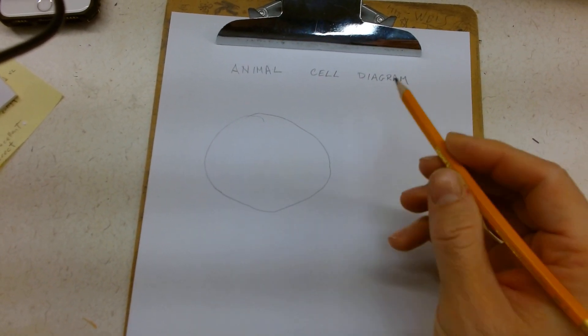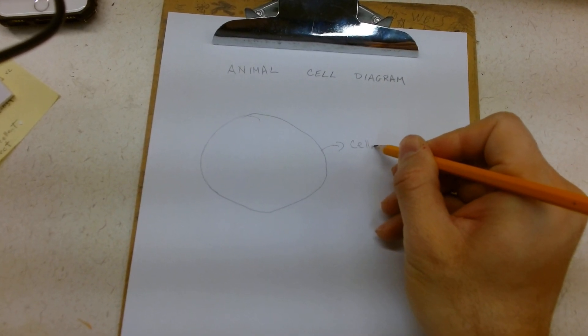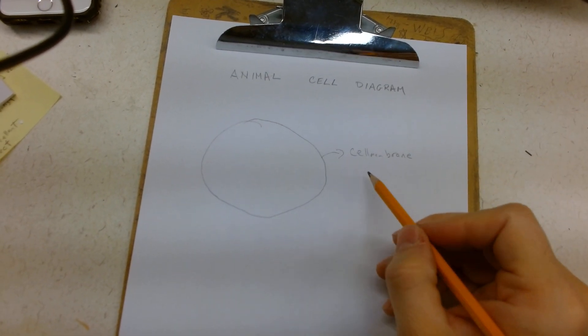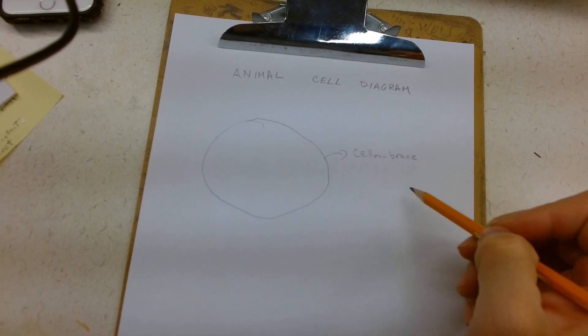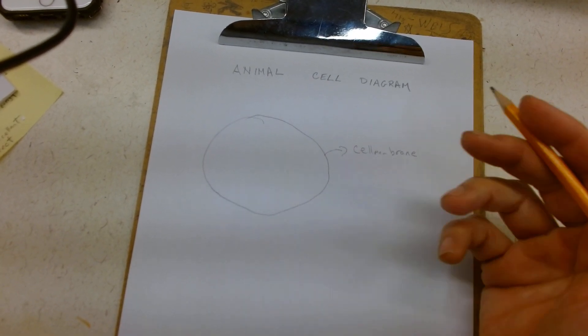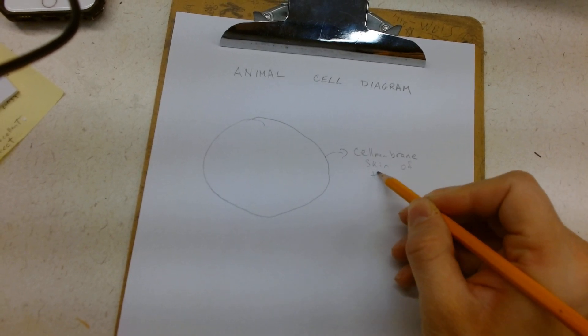First, the most important structure we have here would be the cell membrane. This is keeping things internal that should be kept internal and keeping things external that should be kept external. You can think of it as like the skin of the cell.